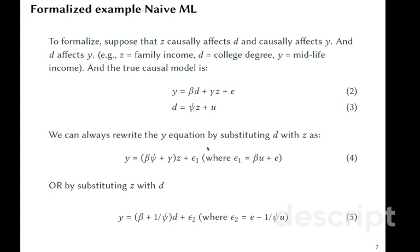To formalize this, assume that we can write two causal equations. One shows how y depends causally on d and z, and the second one shows how our treatment assignment depends on our confounder z.